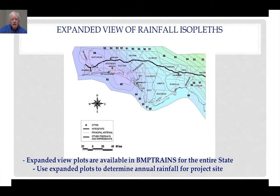For example, if you were conducting a project in Liberty County, in maybe the central portion of Liberty County, you would be located between rainfall isopleths of 61 and 60 inches, and you could interpolate a more specific rainfall by knowing your specific project location.